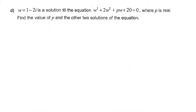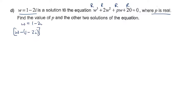This is a complex root, but the coefficients are all real because it says p is real. So if w minus (1 minus 2i) is a factor — because w equals 1 minus 2i — then w must also equal 1 plus 2i, the conjugate, to ensure the imaginary parts disappear. Those are my two factors. The third factor is going to be w minus k or w plus k.